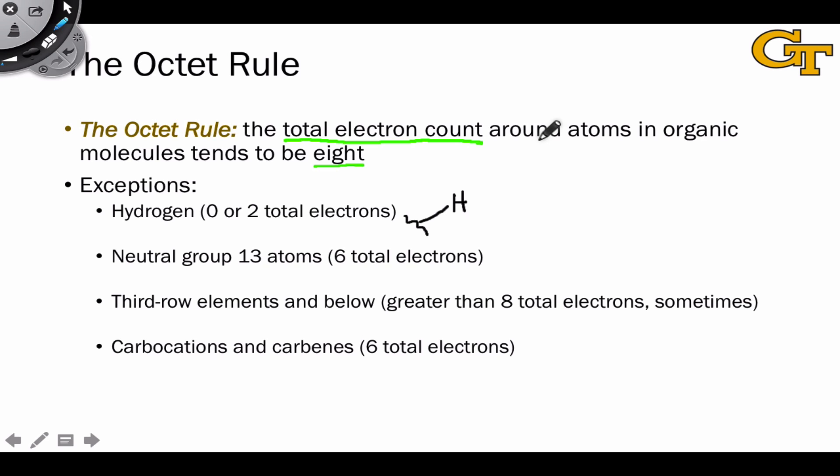Hydrogen tends to form only one bond. In fact, in all of the structures we'll see in this course, hydrogen forms one and only one bond, and so its total electron count, from the perspective of the TEC as we defined it on the last slide, is only two. This is fine for hydrogen because it's a first-row element. It only needs two electrons to complete its valence shell.